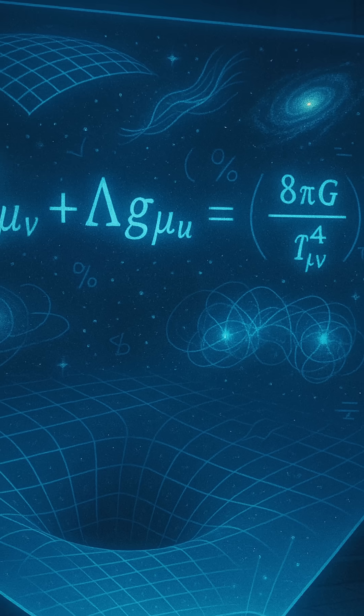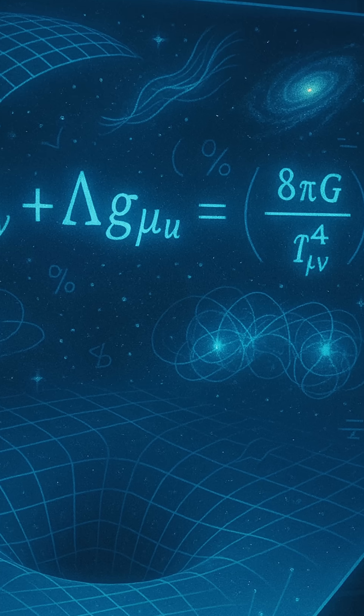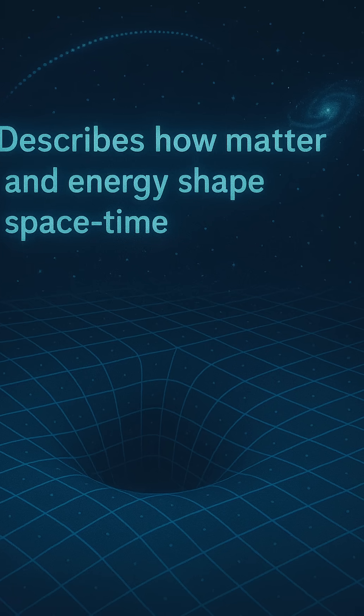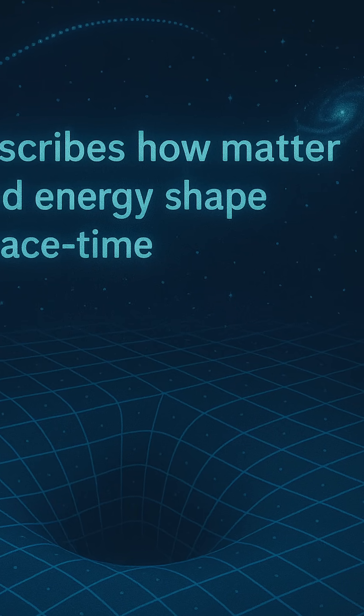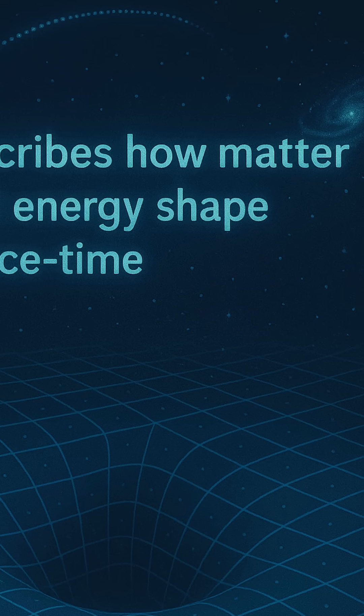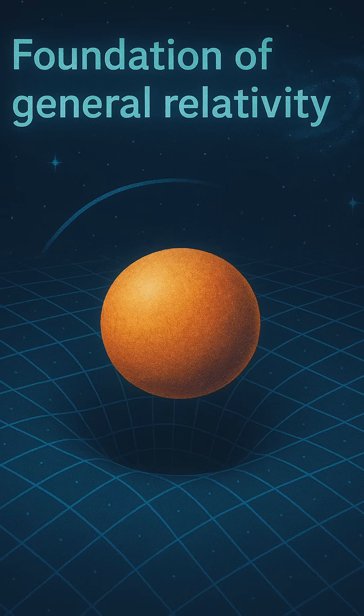To describe this interaction, Einstein used a sophisticated mathematical tool known as tensor calculus. Tensors allow scientists to describe how things change across curved surfaces, which is essential for understanding the warping of spacetime.